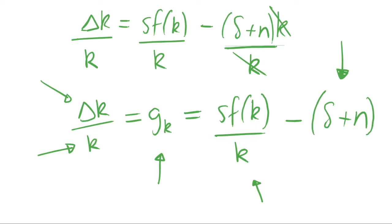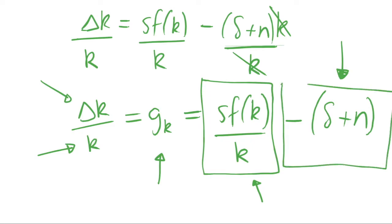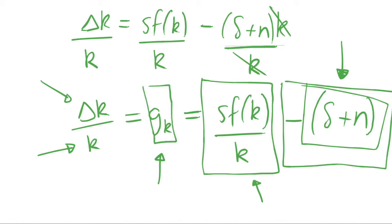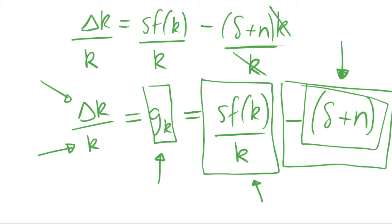What we can do is draw a graph of this investment divided by capital per capita term, along with this constant term of delta plus n. We can look at the gap between those two terms, and that will give us the growth rate of k, because we're subtracting one from the other. So let's do that. When we plot these two terms on a graph with capital per capita on the x-axis, the y-axis captures our depreciation and investment terms.